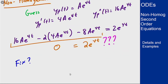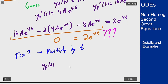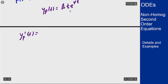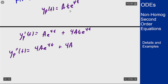To fix this, we do the same thing we did for repeated roots: multiply by t. So the corrected guess is y_p = a t e^(4t). The first derivative is a e^(4t) + 4a t e^(4t), and the second derivative is 8a e^(4t) + 16a t e^(4t). The t e^(4t) terms will vanish because e^(4t) solves the homogeneous problem.